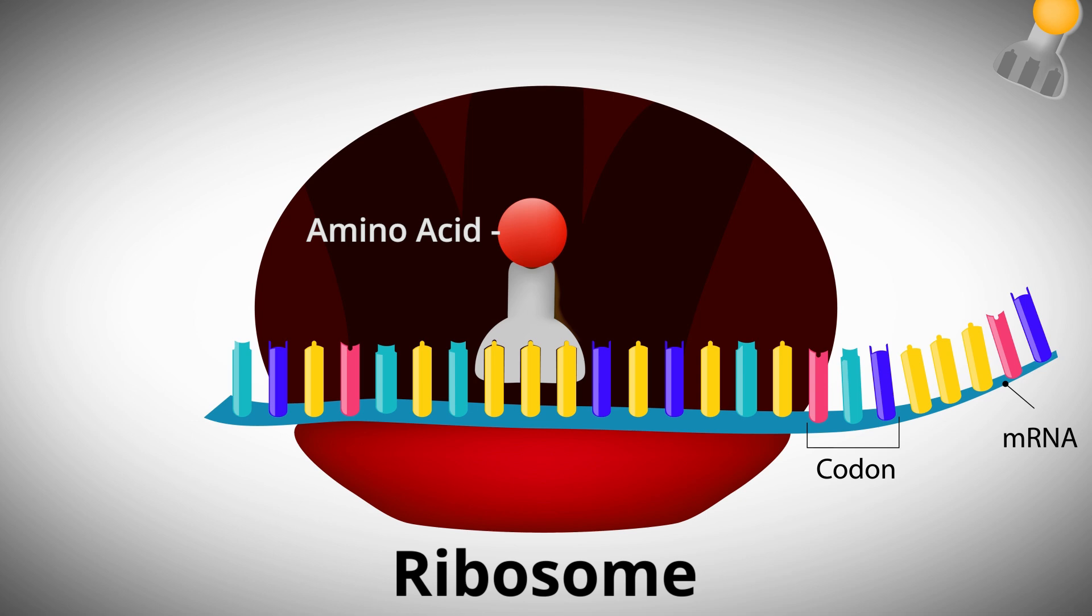A ribosome is the part of a cell where proteins are created. A sequence of DNA becomes transcribed into a sequence of amino acids, and the ribosomes compile these amino acids in the correct order to form proteins.